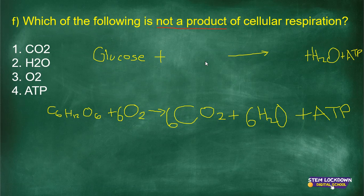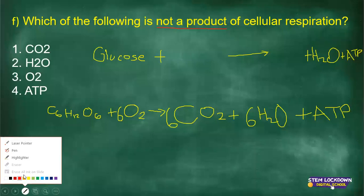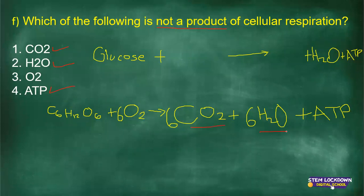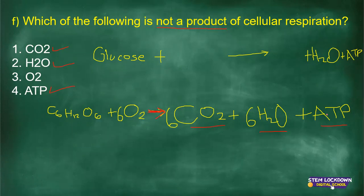One, two, and four are the products. As you can see in the equation, you have carbon dioxide, H₂O, and ATP — all three are the products. The arrow shows you the input on the left and the output on the right. I even showed you how to balance the equation, though you may not need to for Life Sciences, but it is important to understand how it is set up.